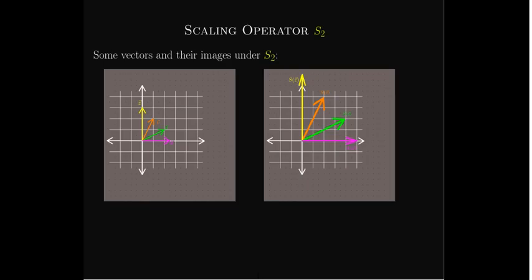Its standard matrix is just k times the identity matrix. Since this is a diagonal matrix, we don't have to do any work to find the eigenvalues. The eigenvalues are lambda equals k with multiplicity 2, because there are two k's on the diagonal. Looking at the vectors W, U (green), V (orange), and Z (yellow): when you apply the scaling operator with scale factor 2, you just double the lengths and keep the same direction. Every vector is parallel to its image, so any vector in R2 is an eigenvector of S2 corresponding to lambda equals 2.